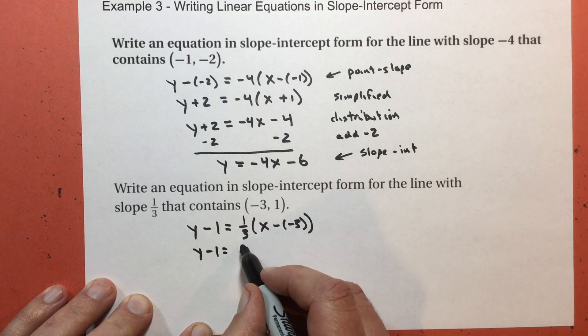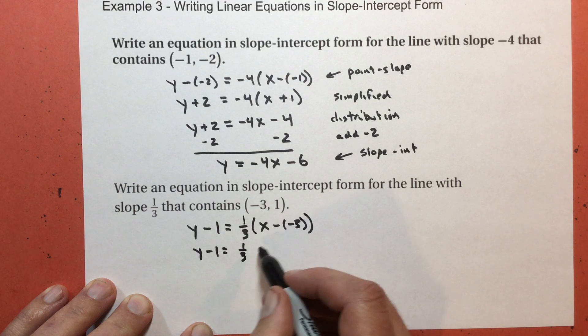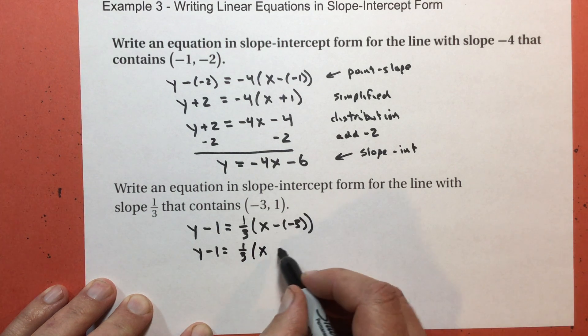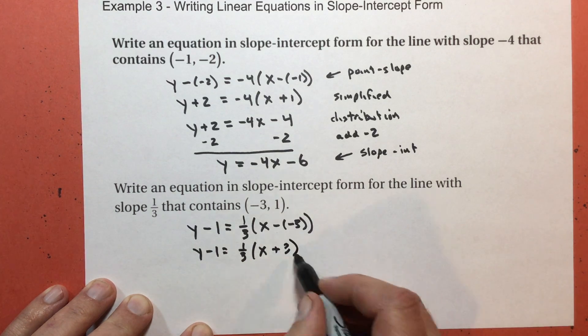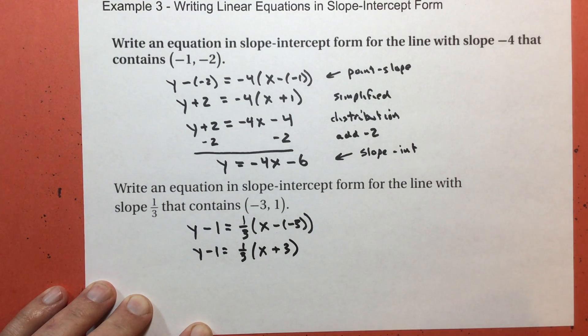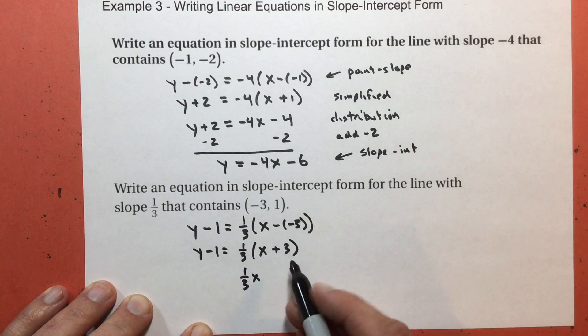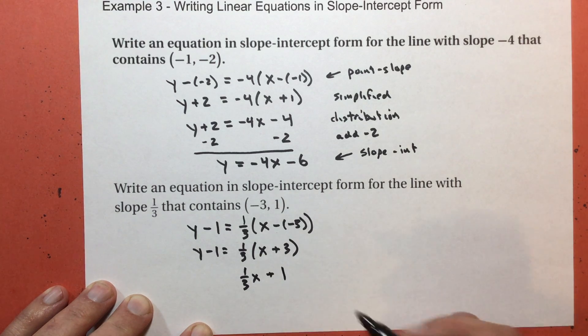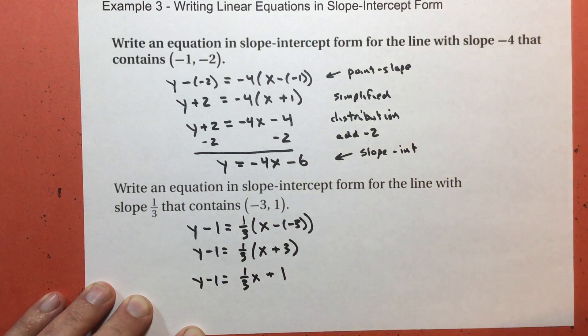I'm going to simplify right here. Y minus 1 equals 1 third times x plus 3. Now, I'm going to do distribution. 1 third times x is 1 third x. 1 third times 3 is 1.